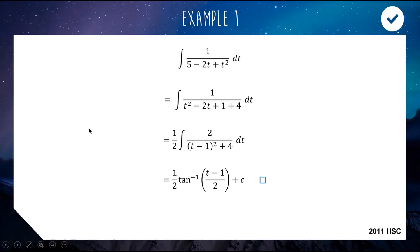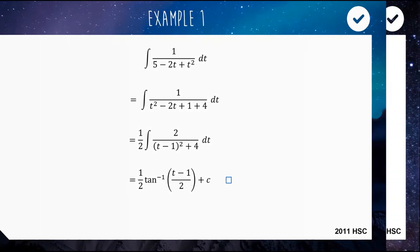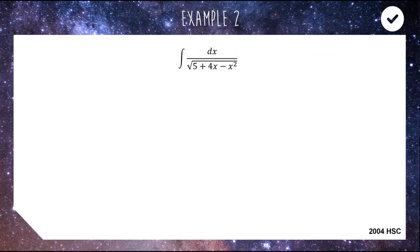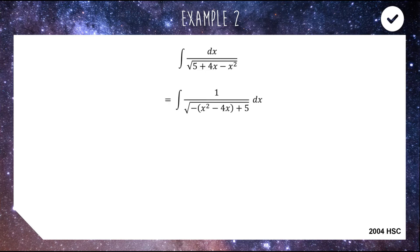For our next example, it's kind of similar — we have a quadratic on the bottom but this time it's inside a square root. So this is lending itself more towards using inverse sine or inverse cosine; it's a bit trickier. This one is from the 2004 HSC paper. Here's what we're going to do: first, write it in a better way.